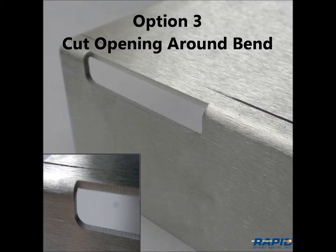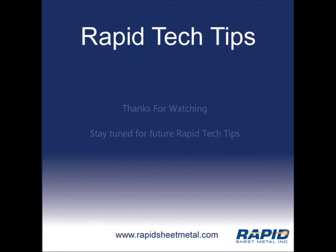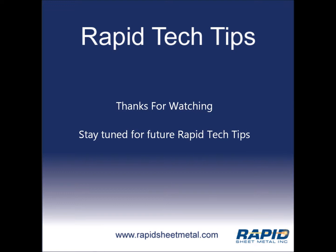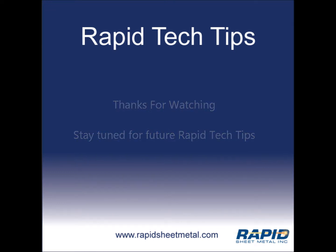A third option is to extend the feature through the bend to the outside of the bend. Again, there is no additional cost for this option, but the result may not be aesthetically pleasing. This concludes the rapid sheet metal tech tip for proper feature location to bends. Thanks for watching.